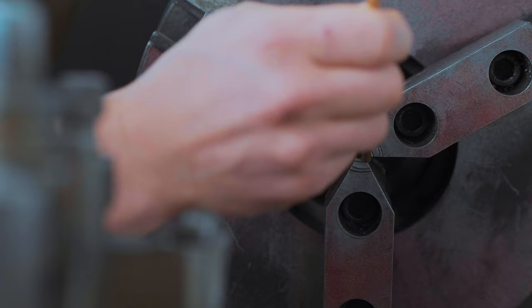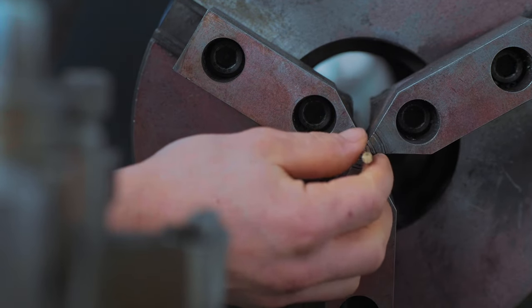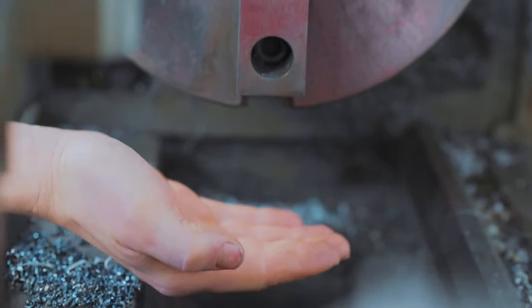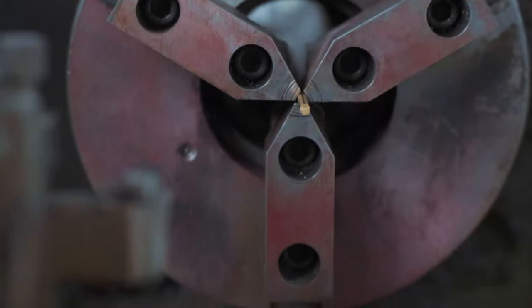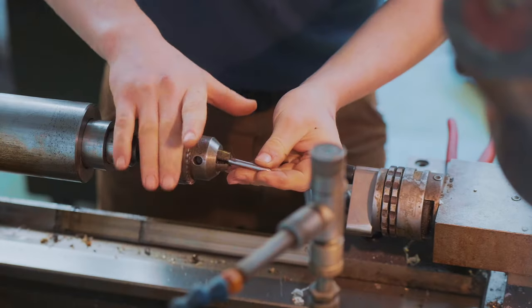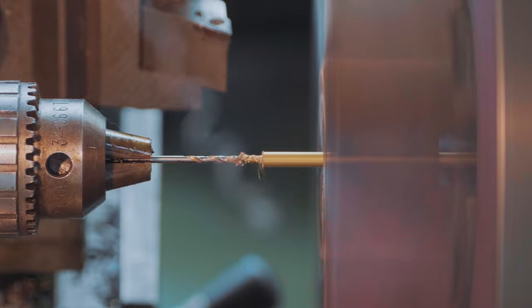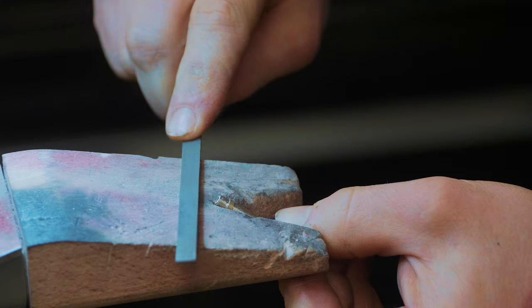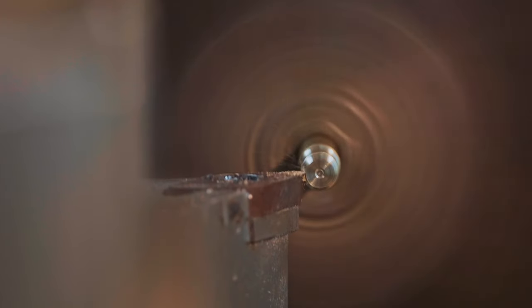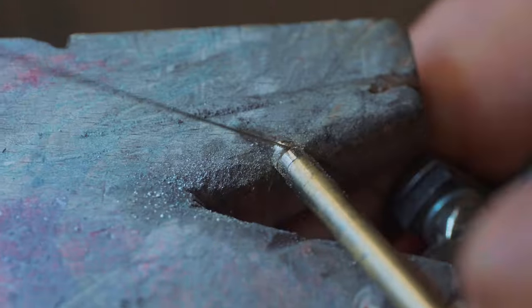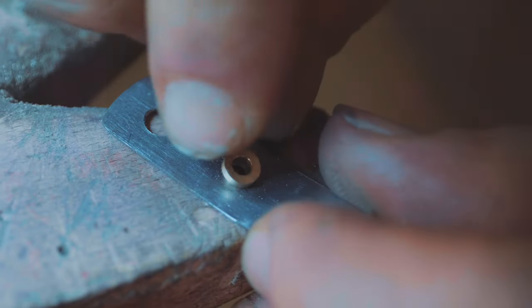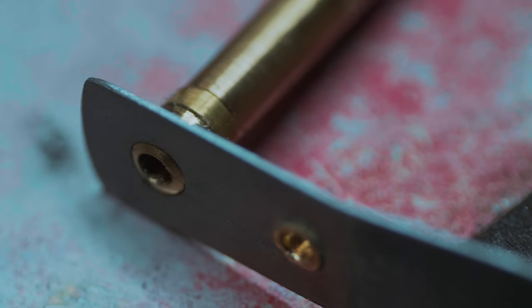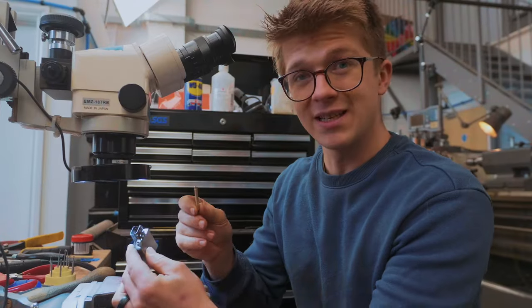Now they do say a small lathe can't make big parts, but a big lathe can make small parts. But this is pushing it. This is a bit of five mil round in a lathe that could support an 18 inch diameter piece. So as it stands now, the brass components are done.